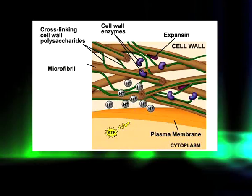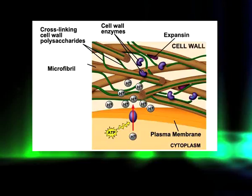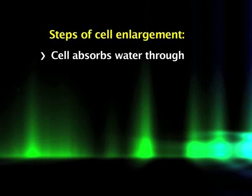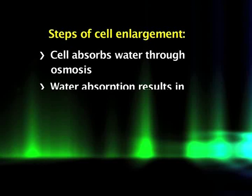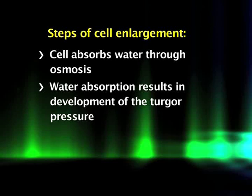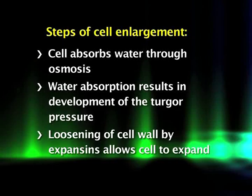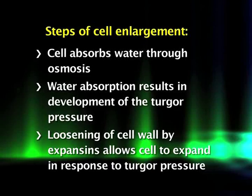Wall loosening is explained by the well-accepted acid growth hypothesis. According to this hypothesis, auxin increases the rate of proton extrusion from the cytoplasm into the cell wall, resulting in acidification of the cell wall. At acidic pH, wall-loosening proteins called expansins loosen the cell wall by weakening hydrogen bonds between the polysaccharide components. Cell enlargement then takes place in three steps: the cell absorbs water through osmosis; water absorption results in turgor pressure; and biochemical loosening of the cell wall by expansins allows the cell to expand in response to turgor pressure.